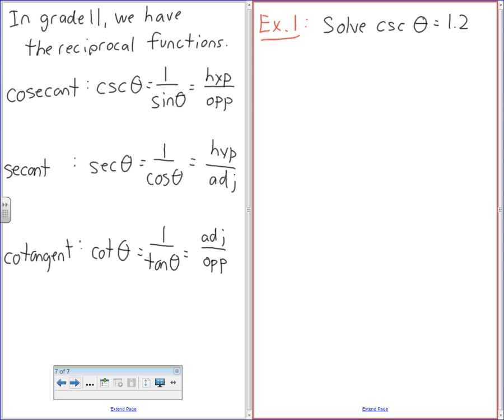So I'm going to write this as 1 over sine equals 1.2. So if I say 1 over sine is 1.2, what is sine theta going to be equal? 1 over 1.2. So what you can just do is, you can flip both fractions, right?